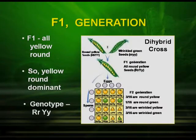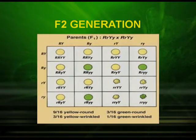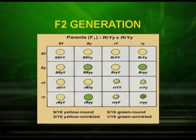In the F1 generation, he found all yellow round. So, yellow round is dominant, and the genotype is written as capital R, small r, capital Y and small y. The next step was to raise the F2 generation by self-pollination. When we draw a Punnett square and analyze the result, we see that the dihybrid ratio obtained was 9:3:3:1, of which 9 were yellow round, 3 were green round, 3 were yellow wrinkled, and only 1 was green wrinkled. This result can be depicted in the form of a Punnett square as shown in the picture.